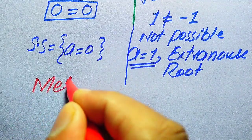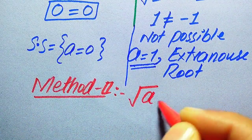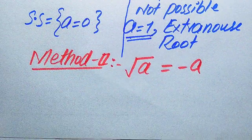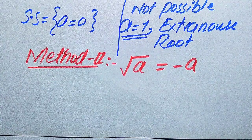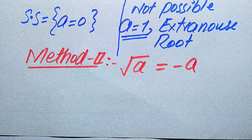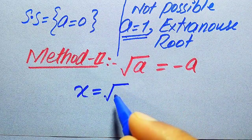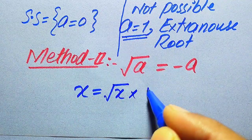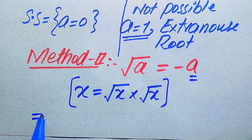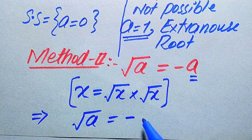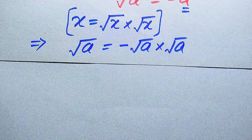Now we solve this problem using the second method. We copy down the given question statement: square root of A equals minus A. In the second method we use another technique to get the values of A. You know that if you have a number x, we can write x in the form of a product of two radicals: square root of x multiplied by square root of x. According to this rule we write A as the product of two radicals: square root of A equals square root of A multiplied by square root of A.